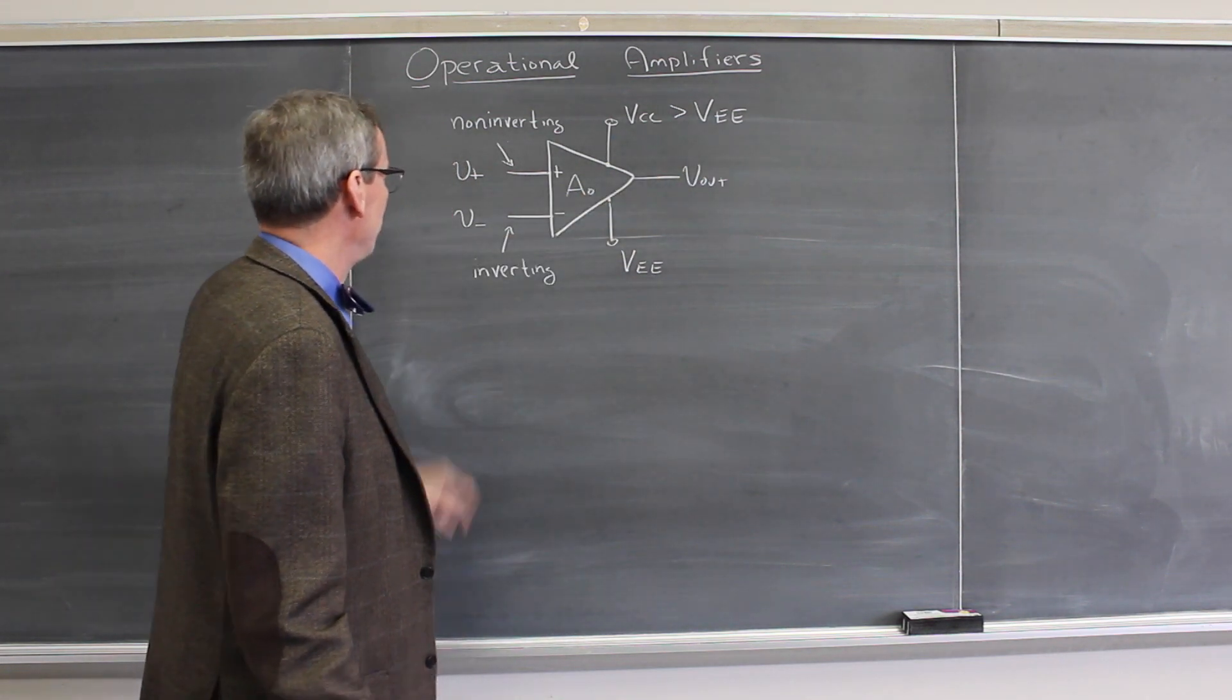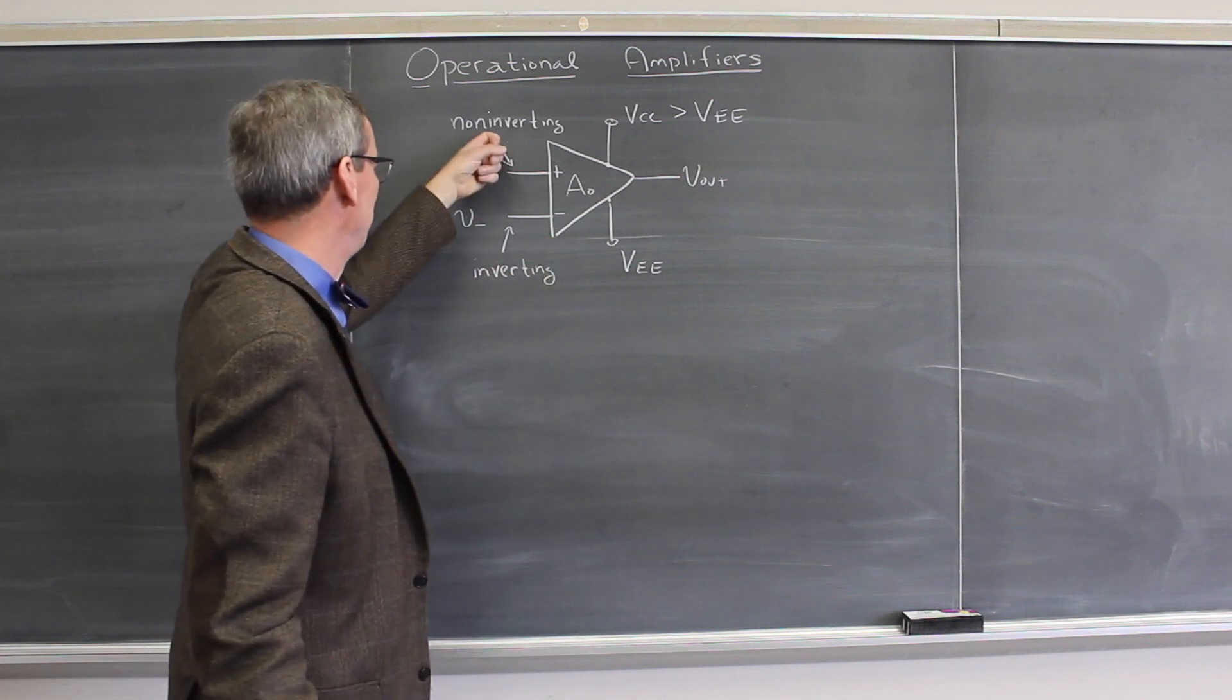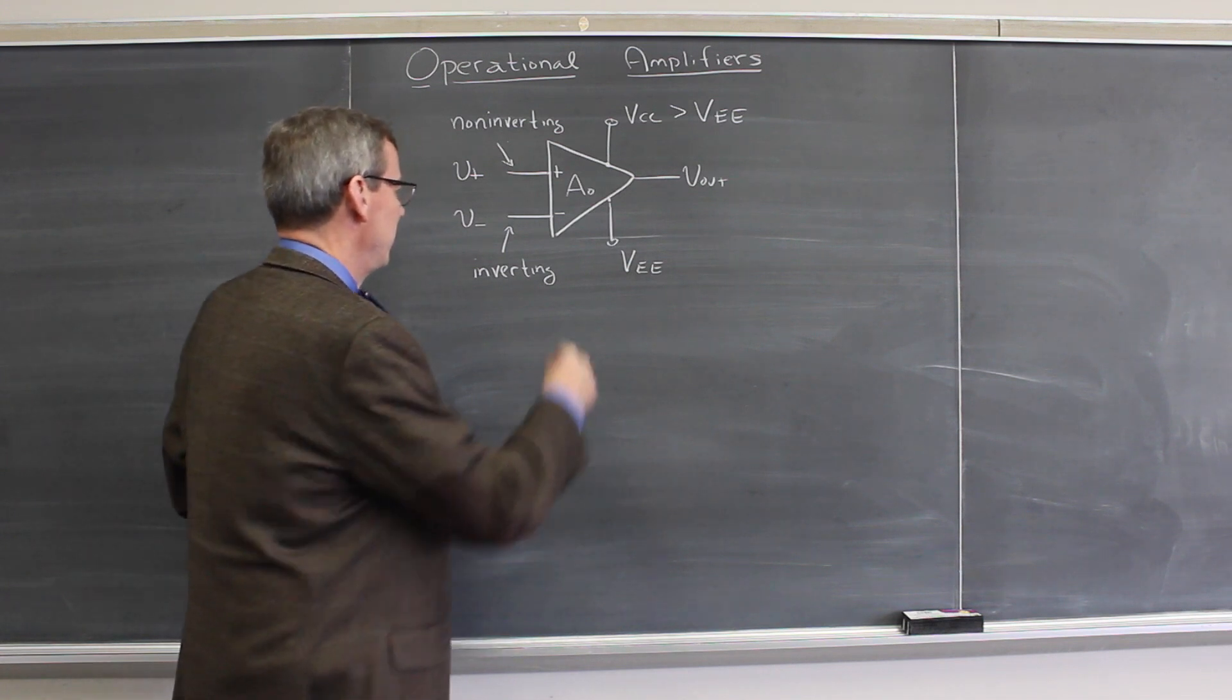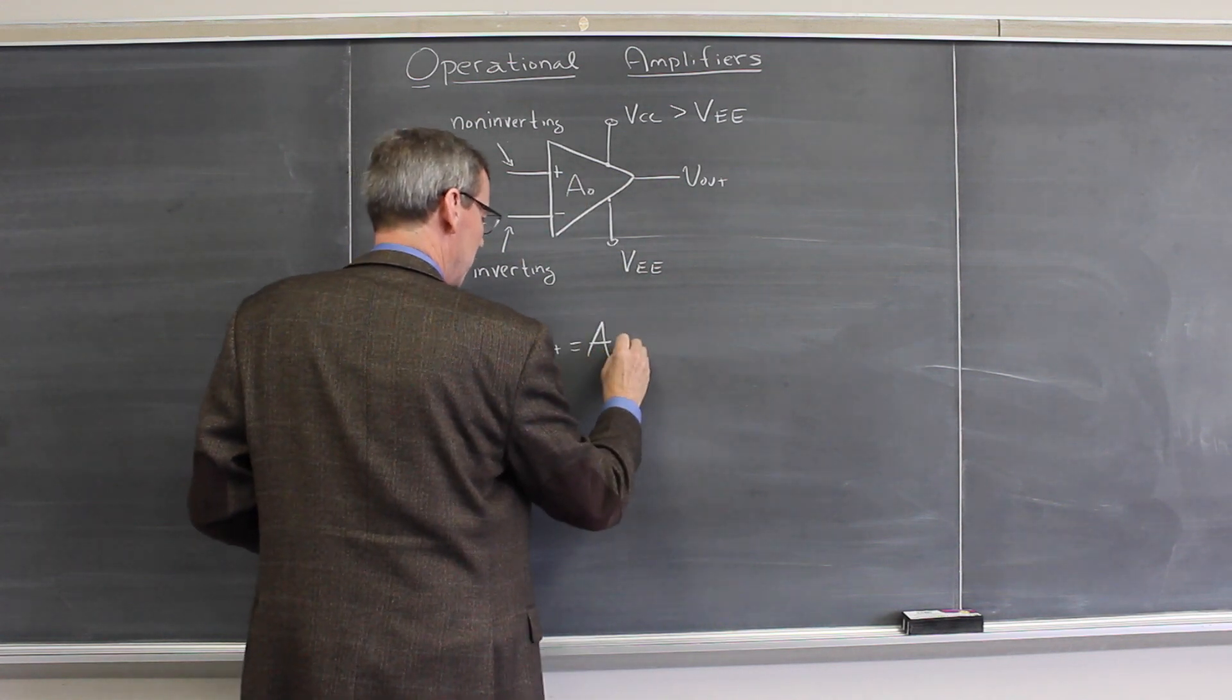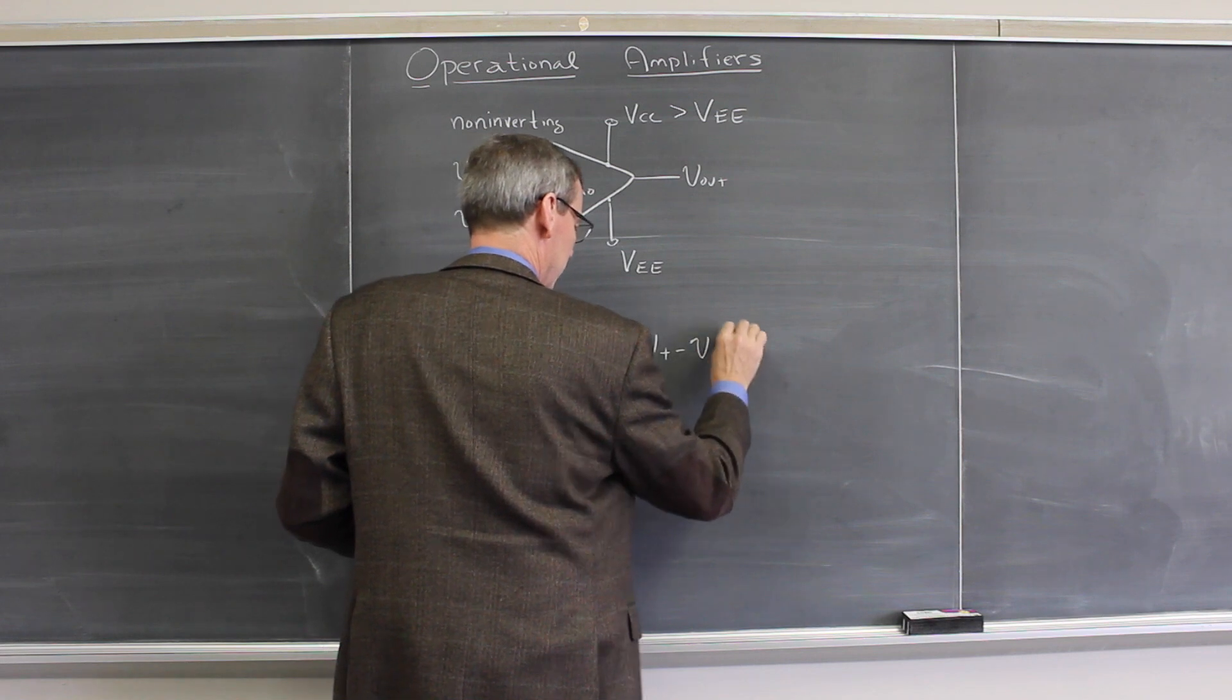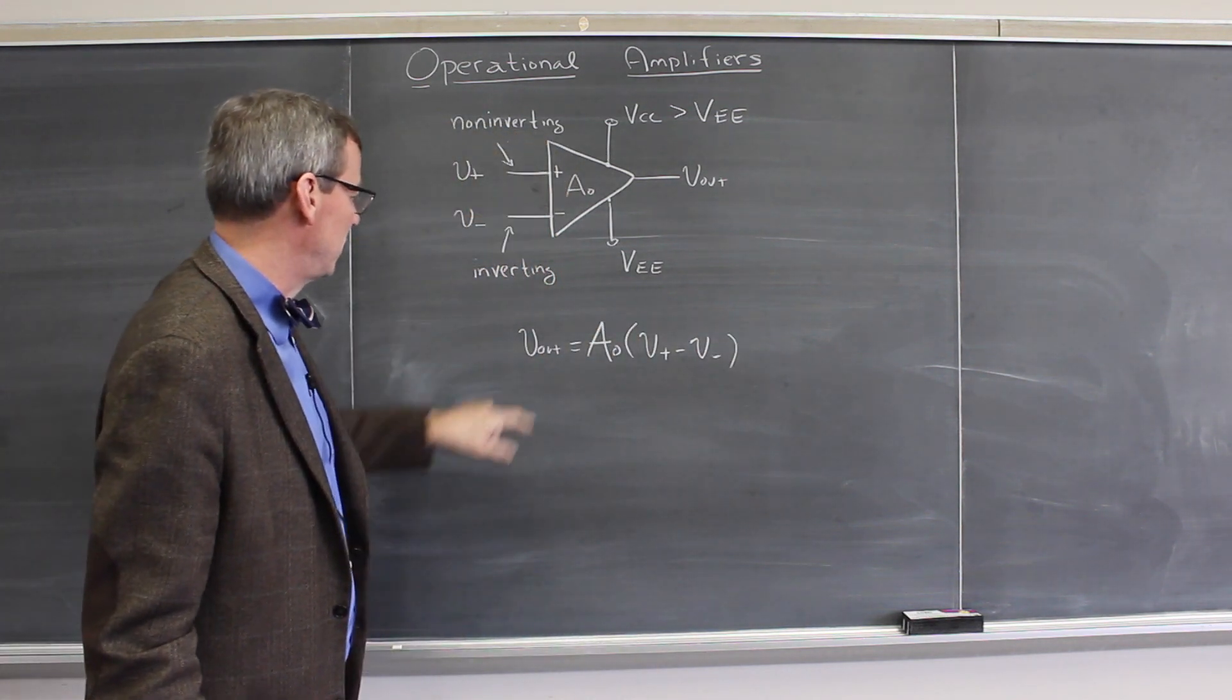The two inputs are labeled plus and minus. The minus is known as the inverting input, and the positive is known as the non-inverting input. The op amp by itself has an output voltage that is this open loop gain A0 times V+ minus V−, the difference of these two inputs. So it amplifies the difference of the two inputs.